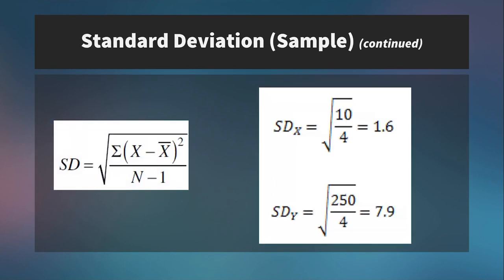So remember, standard deviation is just the square root of variance. So for the X values, we get 1.6, and for the Y values, we get 7.9.